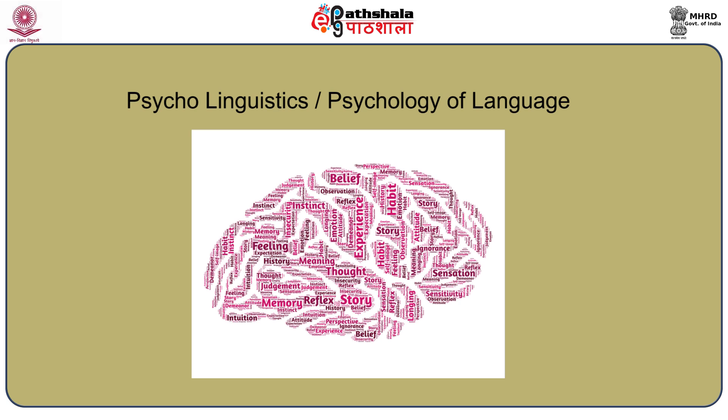Psycholinguistics, or the psychology of language, is the study of psychological and neurobiological factors that enable humans to acquire, use, comprehend and produce language. Modern research makes use of biology, neuroscience, cognitive science, linguistics and information science to study how the brain processes language.